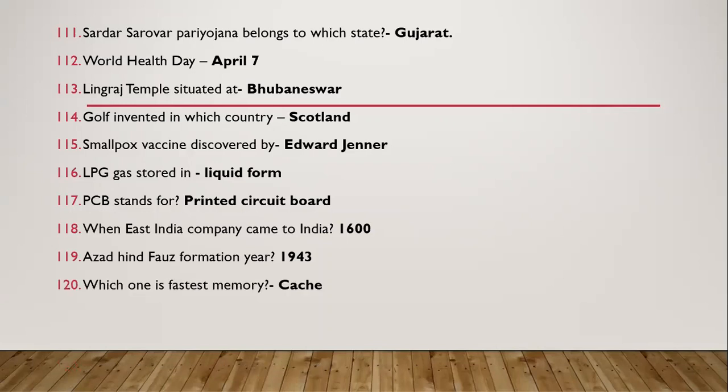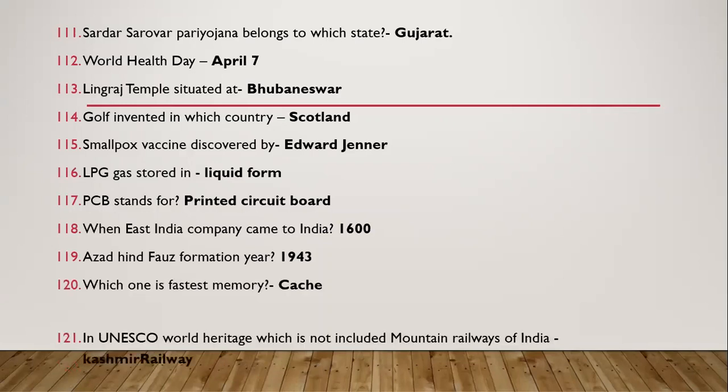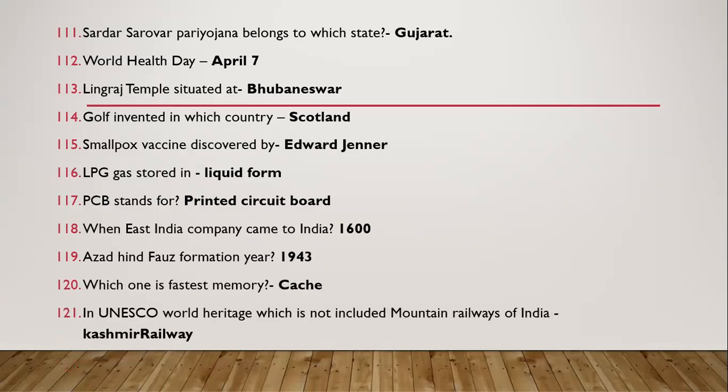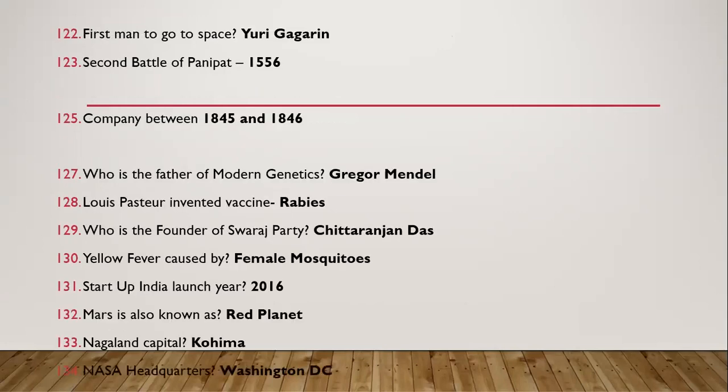Question 119: Which is the fastest memory — cache. Question 120: In UNESCO World Heritage Sites, which is not included among the Mountain Railways of India? It is the Kashmir Railway.